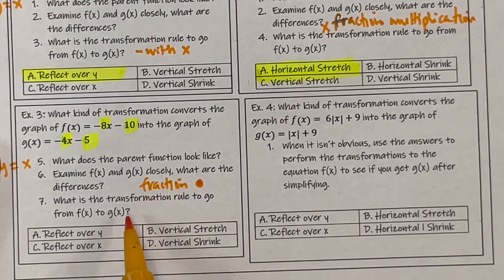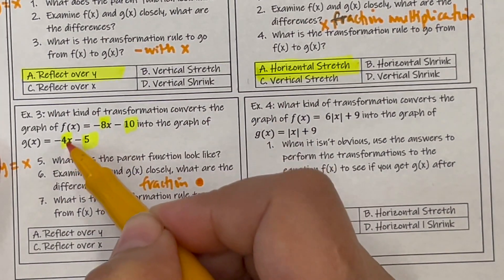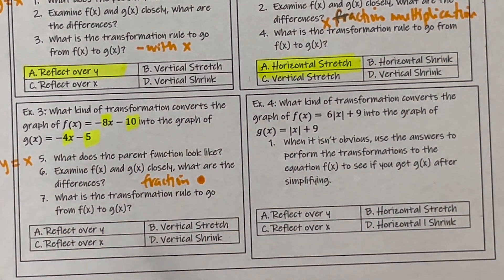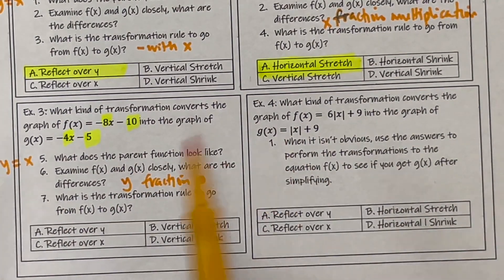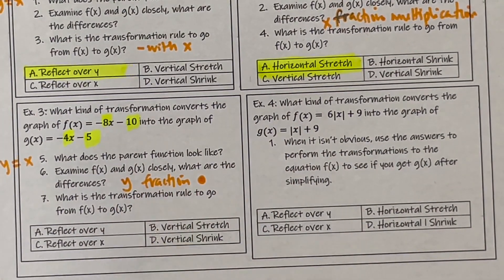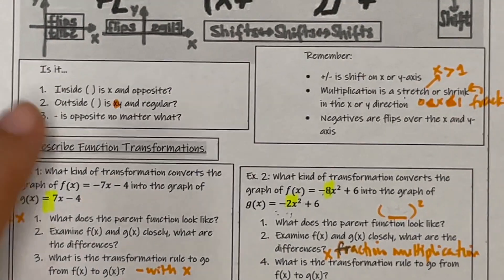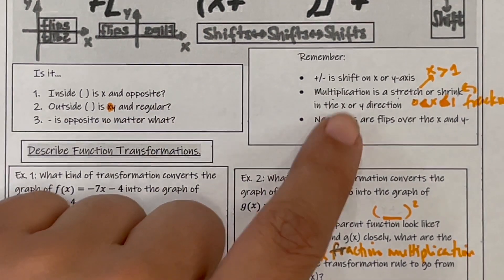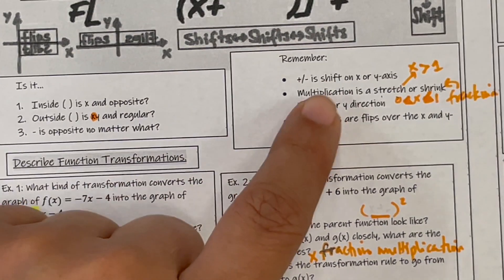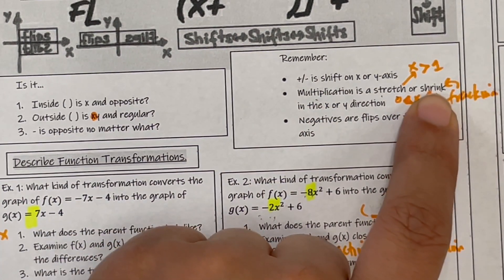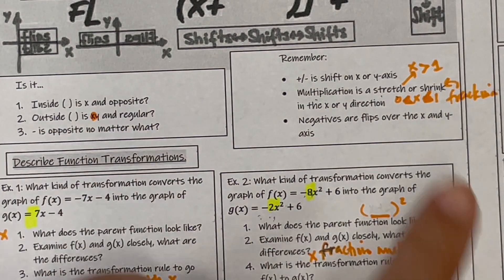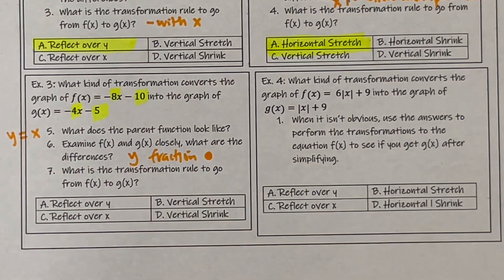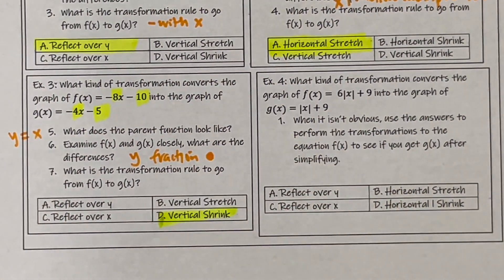Now I need to know: is it in the X or in the Y? It's not just with the X — it's with both of them. That means it must be with the Y, meaning it's outside. So it's a Y fraction multiplication. Outside is Y and regular — whatever you think is what it is. Multiplication fraction is a shrink, and because it's Y and regular, it's what you think: a shrink in the Y direction — a vertical shrink.